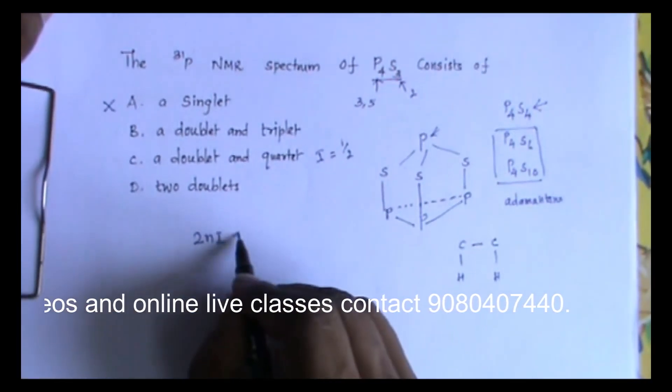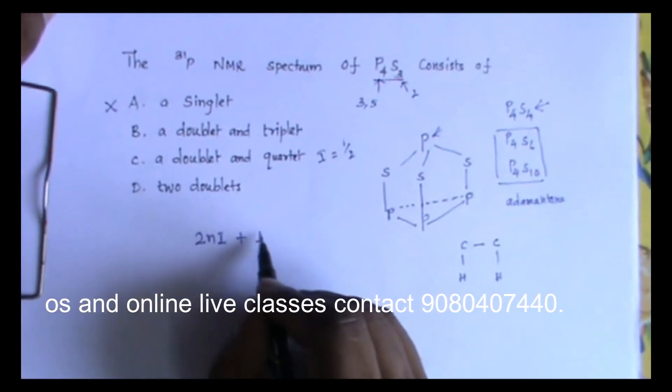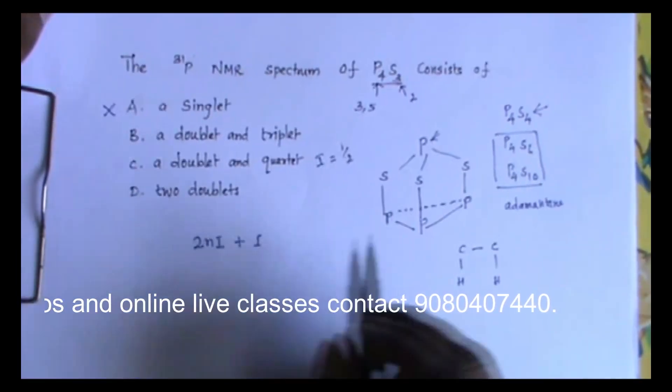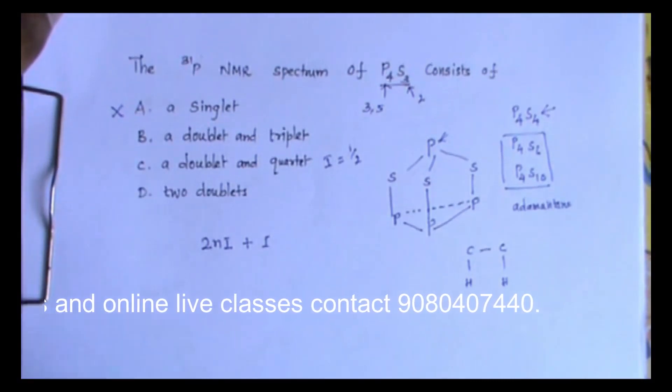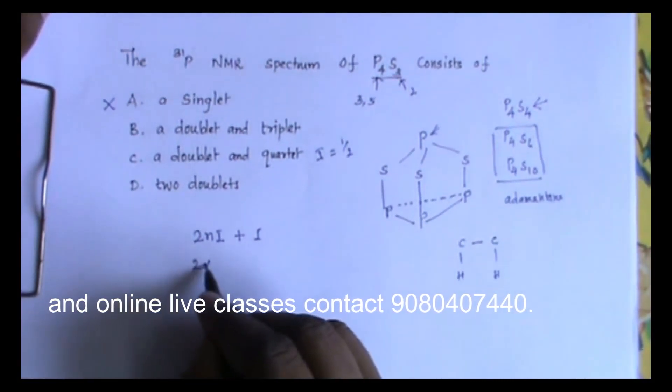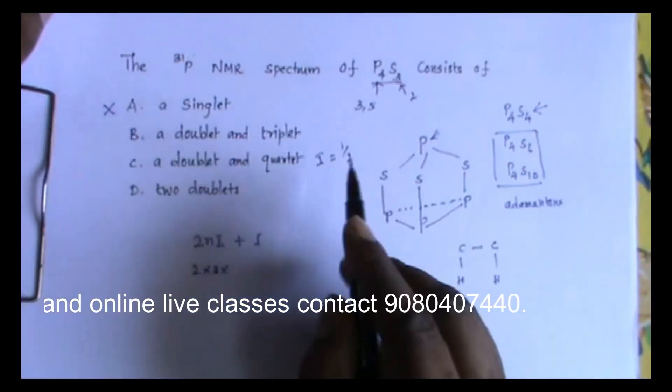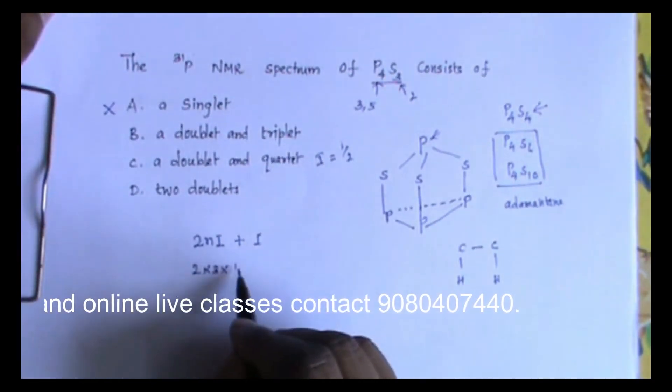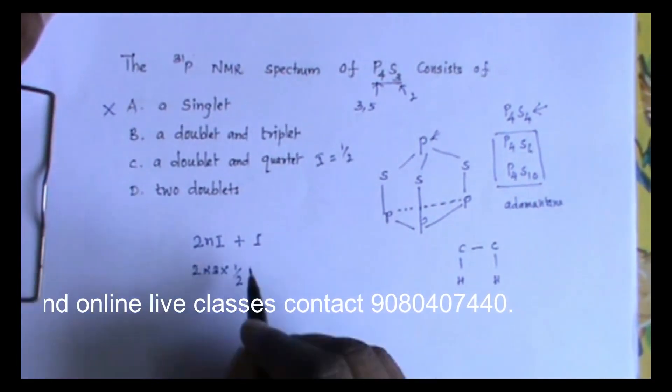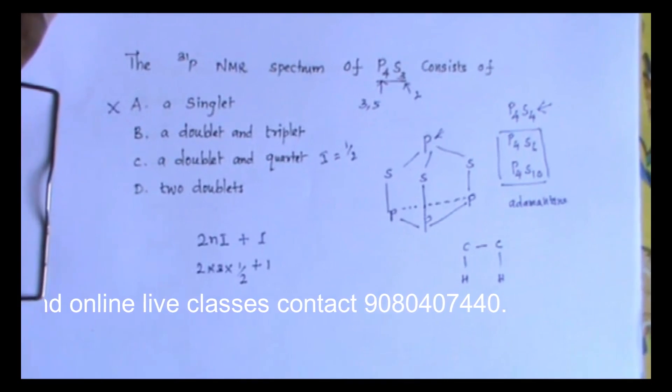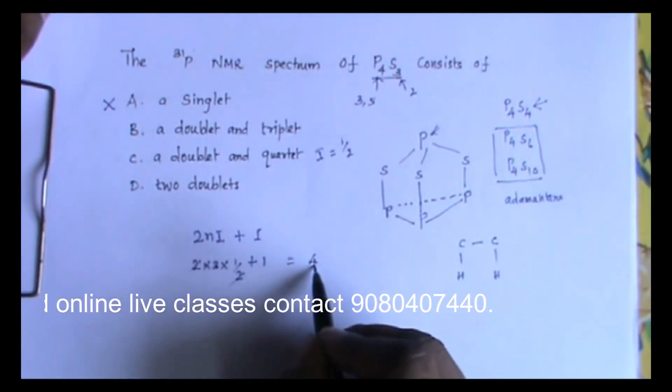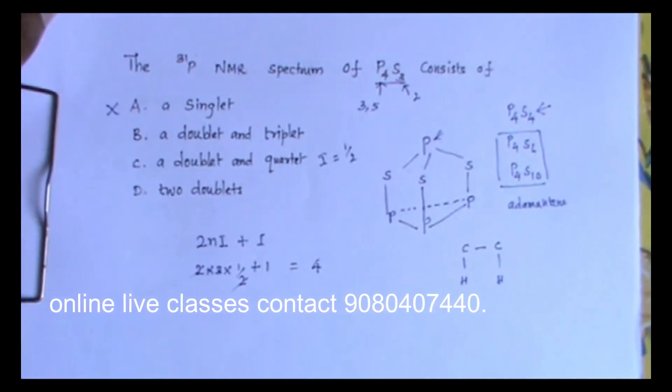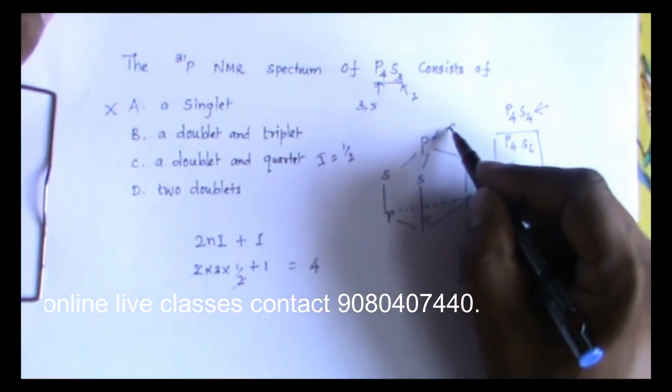What about the multiplicity? To find out the multiplicity, we go for the formula 2NI plus 1. Here I have three identical or equivalent phosphorus atoms, so n will be 3. For phosphorus, the spin value is one-half. What we get is quartet. This signal will appear as quartet.